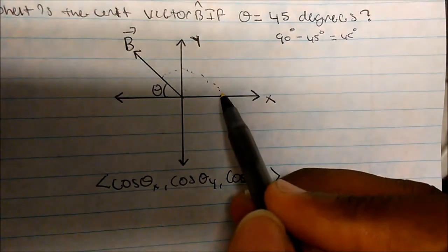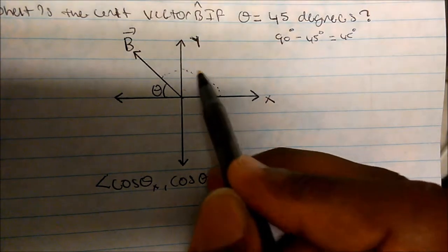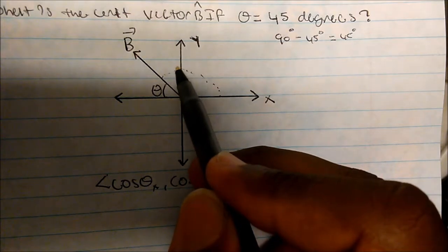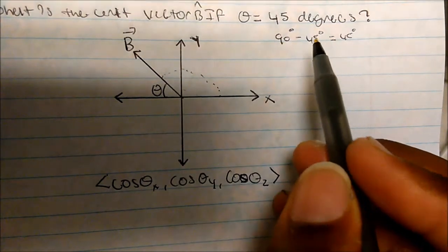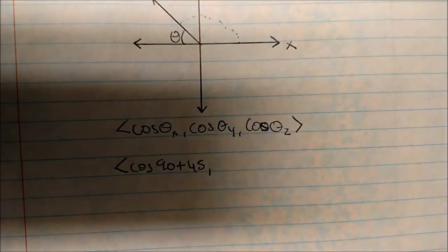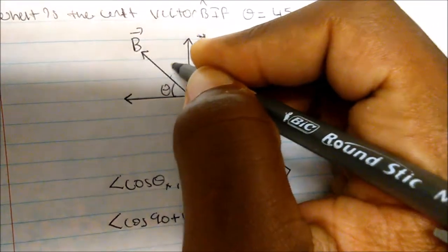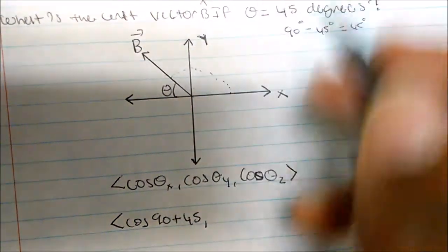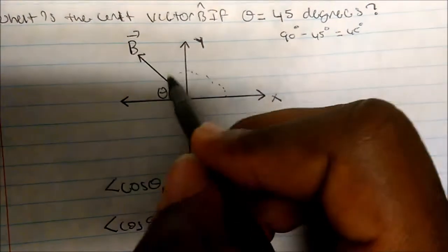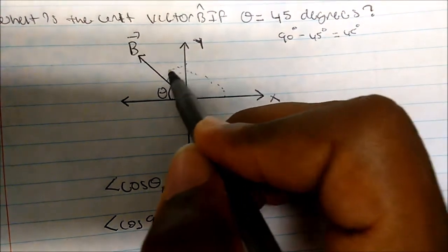From the x-direction, we just passed 90 degrees, so this is cosine of 90 plus 45. Therefore in the x-direction, this is cosine of 90 plus 45. What about the y-direction? Starting from the y and going to the vector itself, we just covered an angle of 45. So starting from y, this is just cosine of 45.